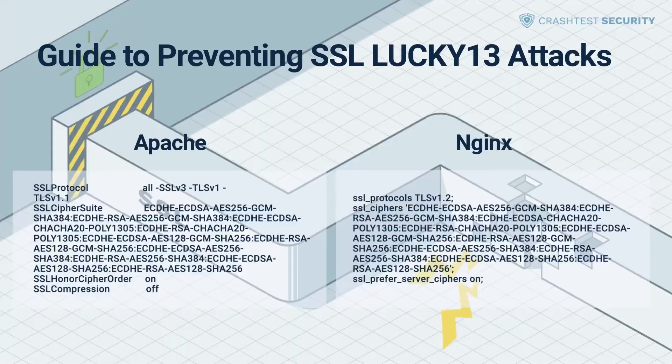In addition to the previously mentioned countermeasures, you can prevent the Lucky 13 attack by using the following transport layer security configuration in Apache and Nginx. With Apache, the SSL/TLS configuration is stored in /etc/apache2/mods-enabled/secconf. If you use Let's Encrypt, the configuration may reside in /etc/letsencrypt/options-ssl-apache.conf. To enable only ciphers with high encryption and recent protocols, set the directives accordingly, then reload the Apache server configuration.